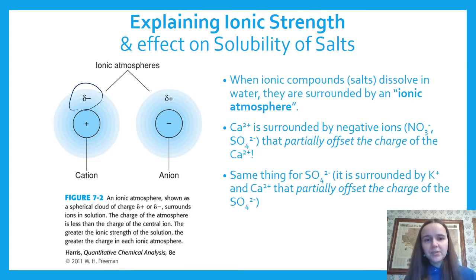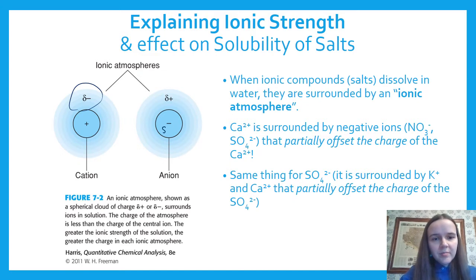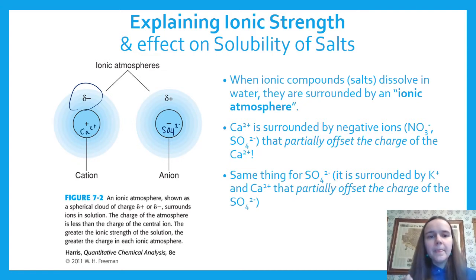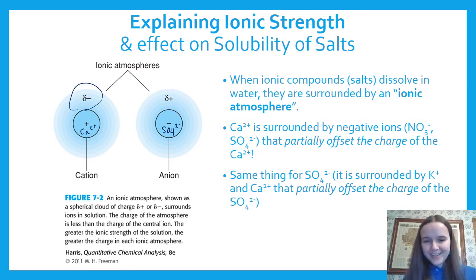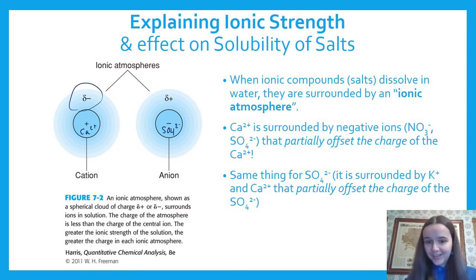The same thing happens for anions. For calcium sulfate, SO₄²⁻ is the anion and Ca²⁺ is the cation. The sulfate anion ends up with a partial offset of the Ca²⁺ and K⁺ that is offsetting its charge. So they have these ionic atmospheres and their charges are partially offset — they're not as strong of positive and negative charge as they would normally be.